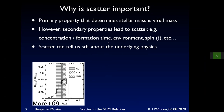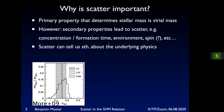We also know there are secondary properties that lead to scatter in the stellar-halo mass relation. Not all halos have the same formation history, so they will all have a different concentration. As a secondary property, the stellar mass will be higher or lower. Environment might also make a big difference — if in regions of a lot of growth, stellar mass might be bigger. Spin could be one property too, but there's a big question mark behind that.